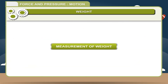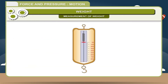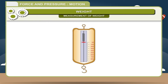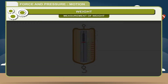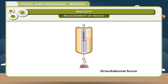Weight can be measured by using a device called spring balance, because the extension in the spring depends on the force with which it is pulled downward by the earth. It is the gravitational force acting on the object which operates the spring balance, and not its mass.